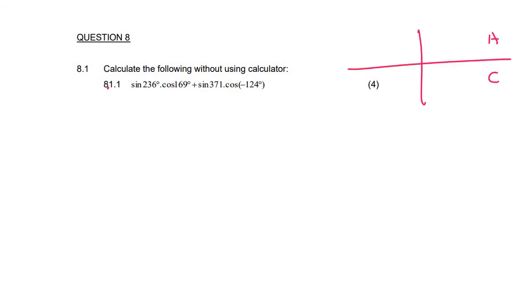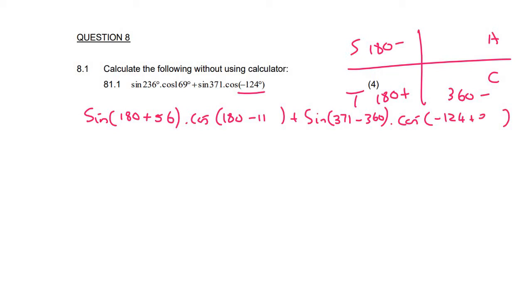So on the CAST diagram, we know that this is cos or sin tan 180 minus, 180 plus, 360 minus. So the sin of 236 is the same as the sin of 180 plus 56. Cos 169 is the same as 180 minus 11. Now, when you have an angle that is bigger than 360, you can simply minus 360. So it'll be 371 minus 360, like that. And then if you have an angle that is less than zero, so it doesn't really fit on the CAST diagram, then you can just add 360. So that'll just become minus 124 plus 360.